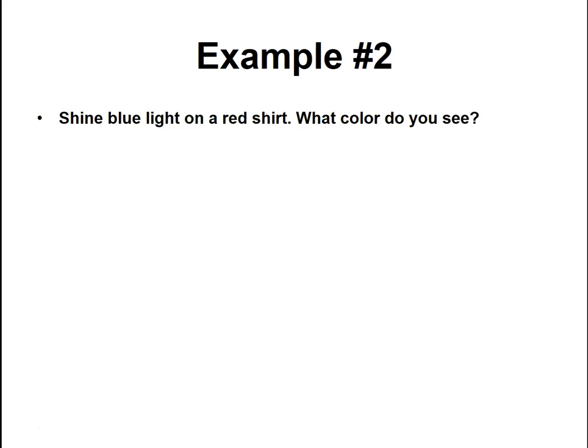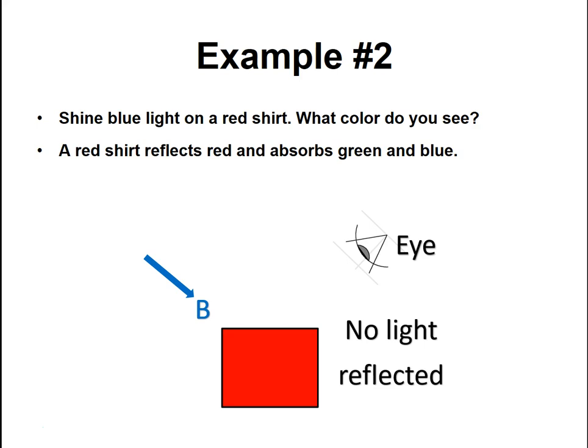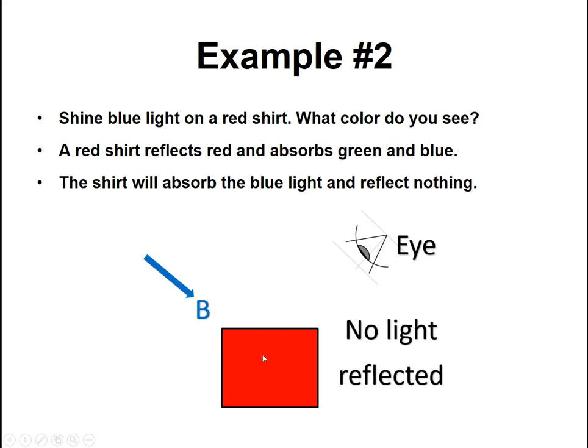Let's try another one: we shine blue light onto a red shirt. When I ask this question I typically get answers like blue, red, purple, magenta, green, or black. So let's see — the red shirt wants to reflect red and absorb green and blue. When you shine blue light onto it, the red shirt absorbs that blue. No light is reflected, and so your brain interprets no light as black.